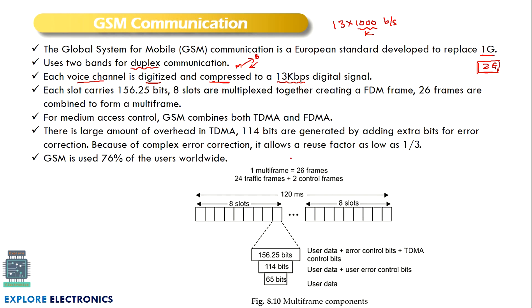In this diagram you can observe a multi frame which takes 120 milliseconds for transmission. This multi frame consists of 26 sub-frames. In a single frame we have 8 slots which are multiplexed together. A single slot consists of 156.25 bits — this is the data transmitted in one slot. These 8 slots are multiplexed together using frequency division multiplexing to create an FDM frame, and 26 frames are combined to form a multi frame.